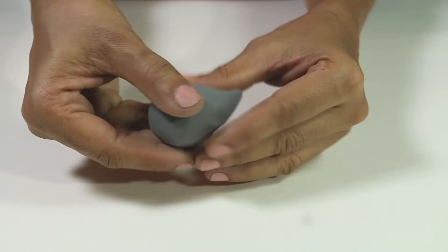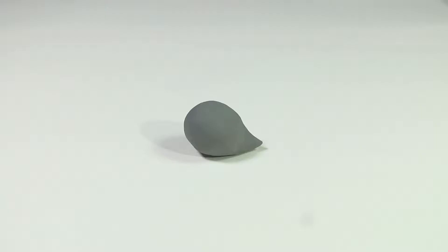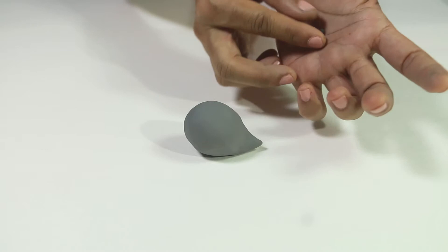Pinch the clay ball with fingers to form a pointed shape on one side, like a big teardrop. Make a tiny black sphere and attach it firmly on the tip to form a nose.